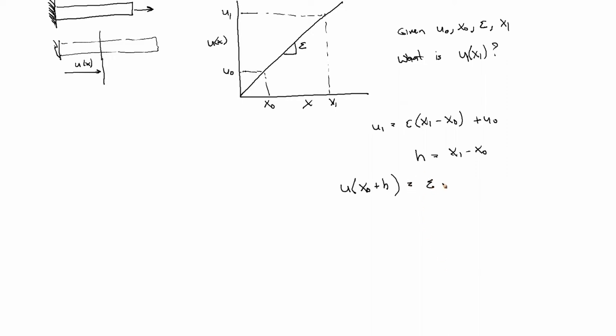That's equal to epsilon h plus u at x0, right? And then I'm just going to rearrange this equation. I'm going to solve for epsilon: u at x0 plus h minus u at x0 over h is equal to epsilon.